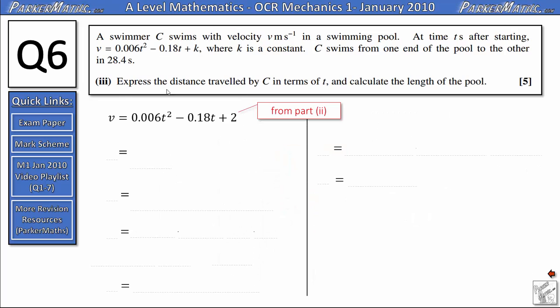In part 3 we need to express the distance traveled by C in terms of t and calculate the length of the pool. Remember in part 2 we found out the value of k, it was 2, so I've just put that into our formula for v here. And to find the displacement at any given point from the velocity we need to integrate. If you remember, displacement is the area under a graph. We get x is the integral of v with respect to t. So that just means we're going to integrate this function here.